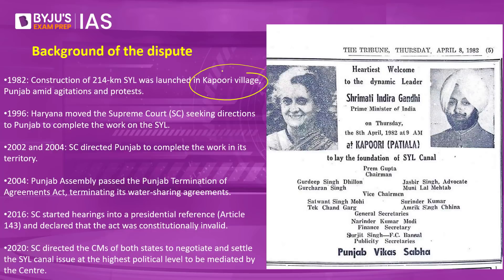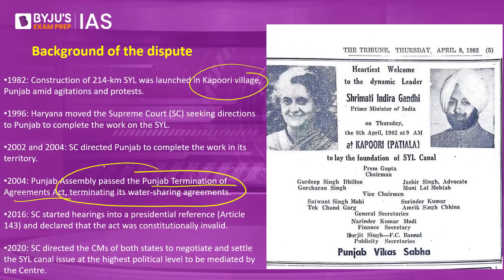Punjab was not going to comply easily, knowing that the people of Punjab did not support it — and no political party wanted to anger voters who believed they had complete rights over the Sutlej's waters. Thus in 2004, the Punjab Assembly passed the Punjab Termination of Agreements Act, terminating all water-sharing agreements made with Haryana.